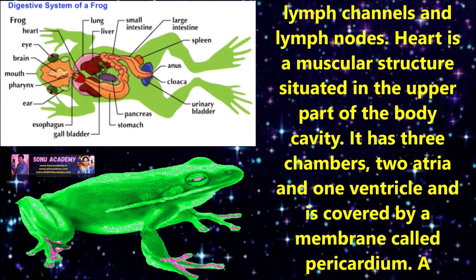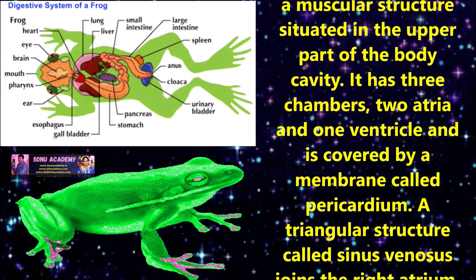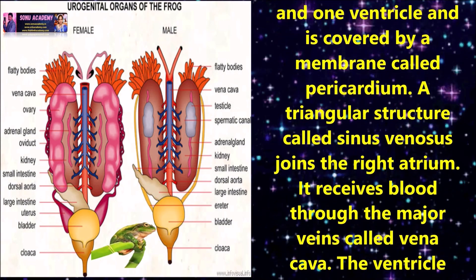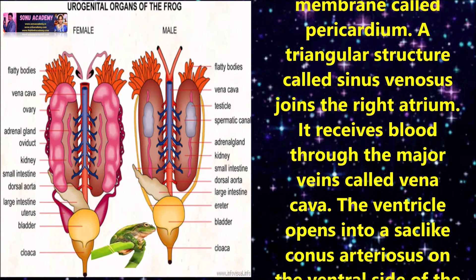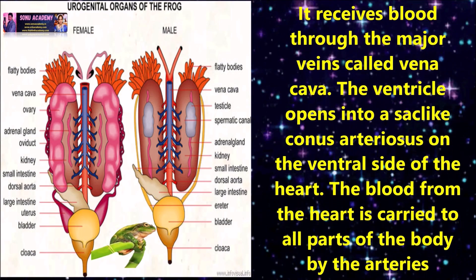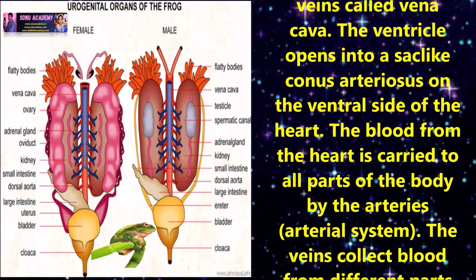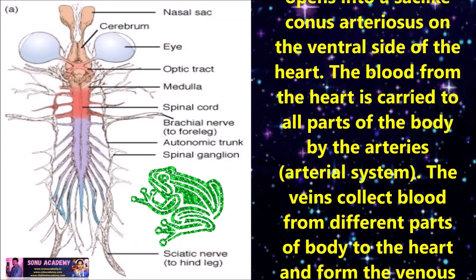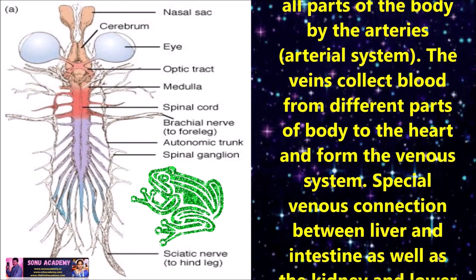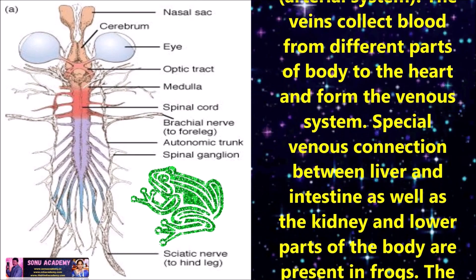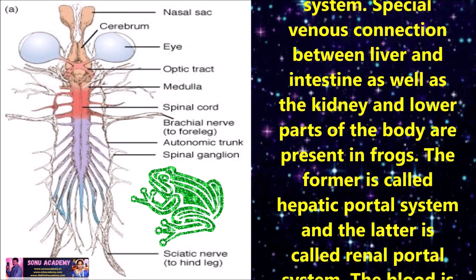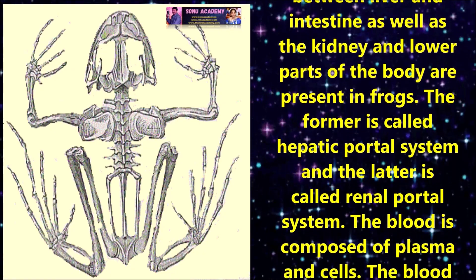A triangular structure called the sinus venosus joins the right atrium and receives blood through the major veins called vena cava. The ventricle opens into a sac-like conus arteriosus on the ventral side of the heart. The blood from the heart is carried to all parts of the body by the arteries. The veins collect blood from different parts of the body back to the heart. A special venous connection between the liver and intestine is called the hepatic portal system, and the connection between the kidney and the lower parts of the body is called the renal portal system.